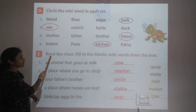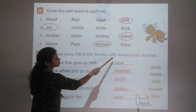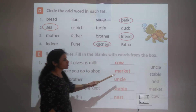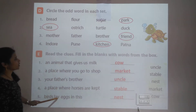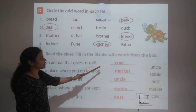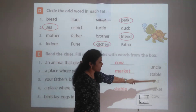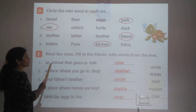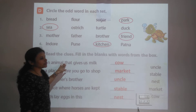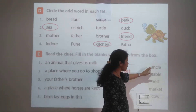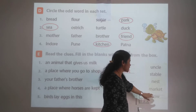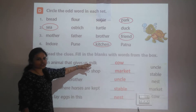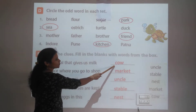Question E: Read the clues and fill in the blanks with words from the box. The words in the box are: uncle, stable, nest, market, and cow. First clue: an animal that gives us milk — the answer is cow.